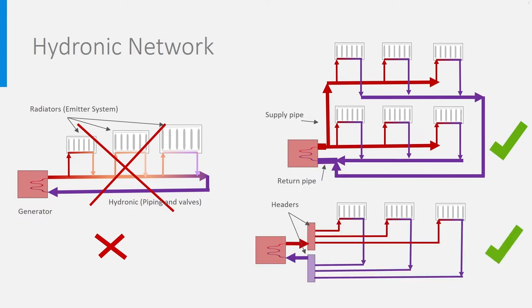This last configuration is very similar and is often used in combination with flexible pipes, like in floor heating. There are then two headers: the red one is a distributor, the purple one is a collector.